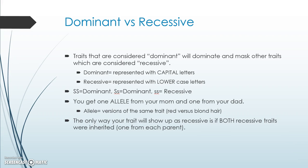We've previously talked about sickle cell anemia. Recessive means you inherit one trait from your mom and one trait from your dad. We're now going to use the definition of allele — it's kind of a funny word, but an allele means different versions of a trait. Think about hair color: we've got red, blonde, brown, black, and all sorts of mixtures. Those are all hair color, but because there are different versions, we call those alleles — a different version of a gene.